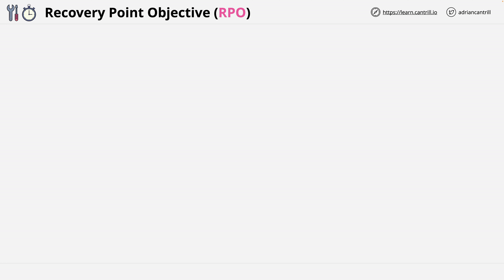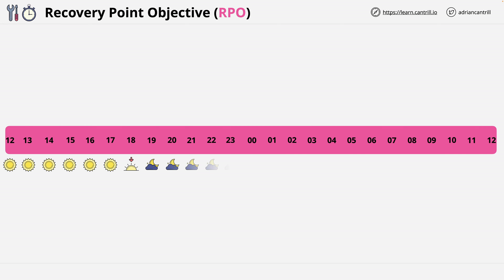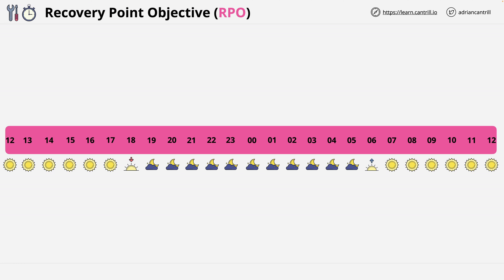Recovery Point Objective, or RPO, is something that's generally expressed in minutes or hours. To help illustrate this, let's take a given 24-hour period. It starts on the left at midday, moves through midnight in the middle, and finishes at 12 midday on the following day on the right. Consider an animal rescue business who have animals arriving to be fostered 24/7, 365. They have intake vet exams and data stored within on-premises systems, which need to be referred to constantly throughout the day.